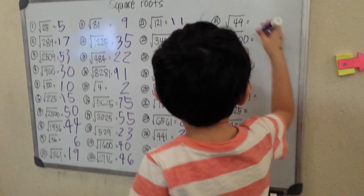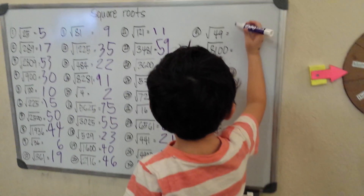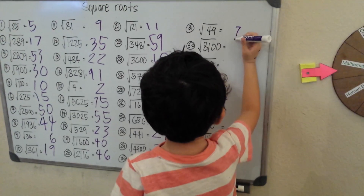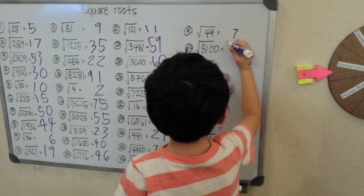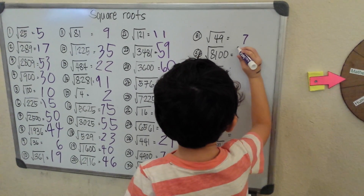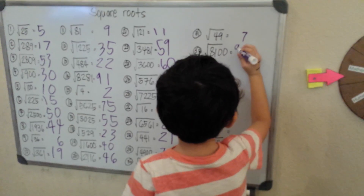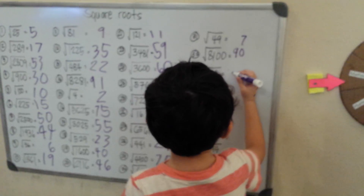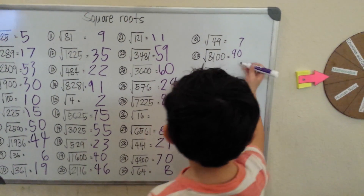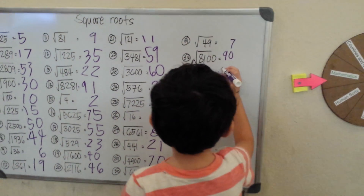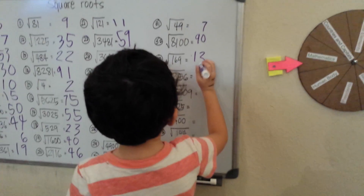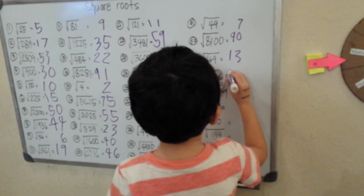Square root of 429 is 7. Square root of 88100 is 90. Square root of 169 is 13. Square root of 256...